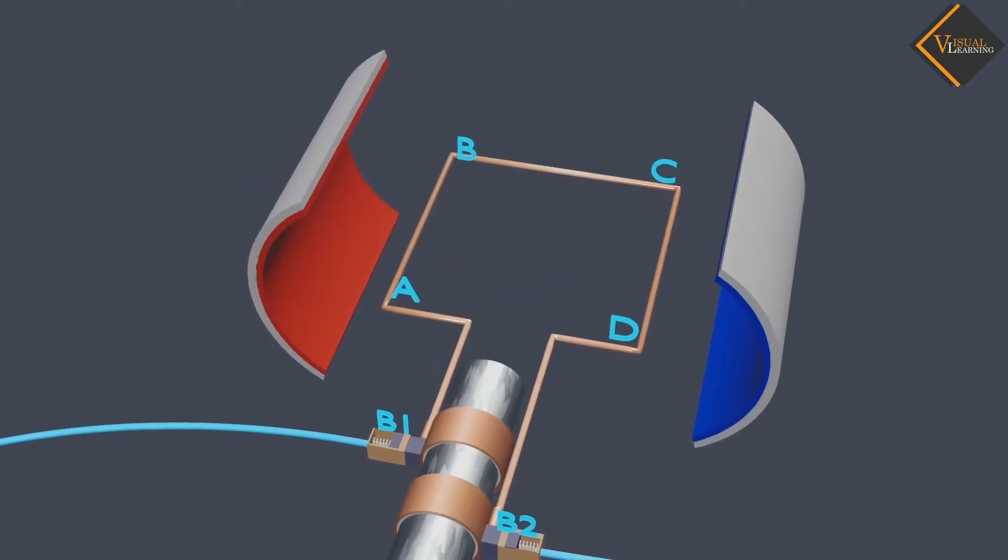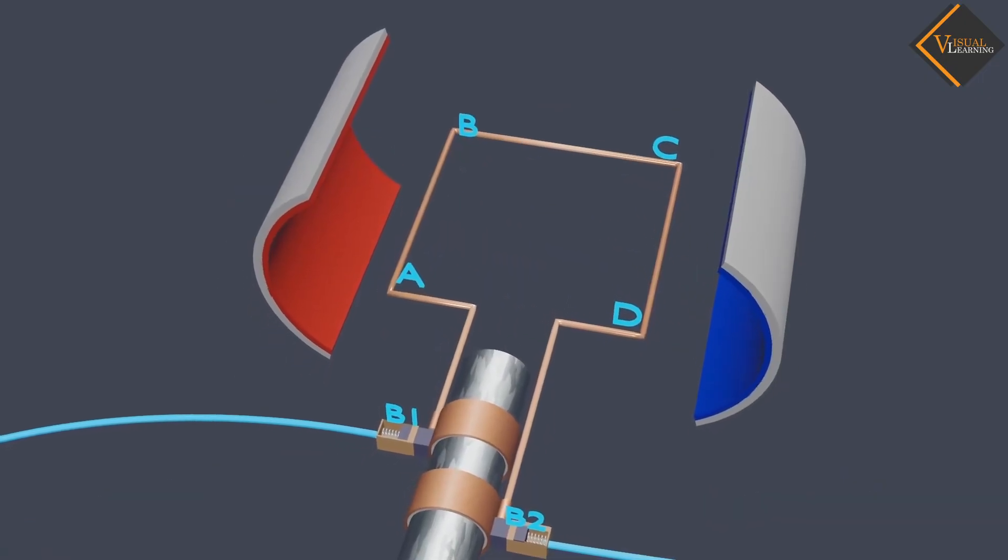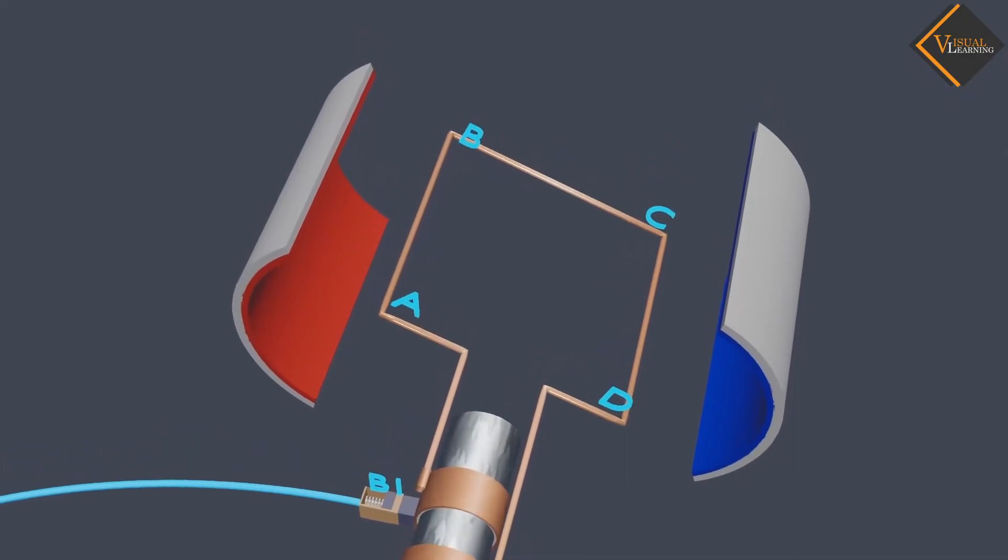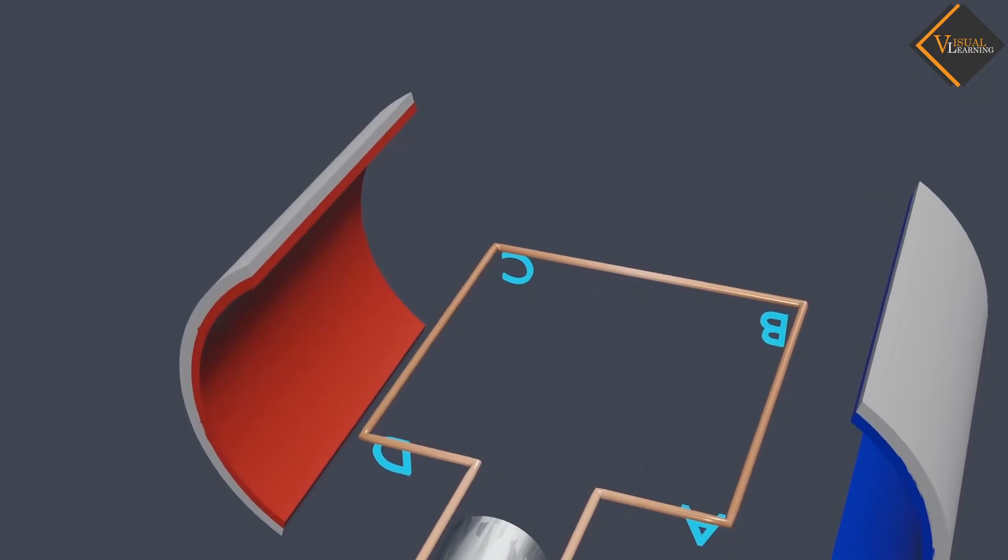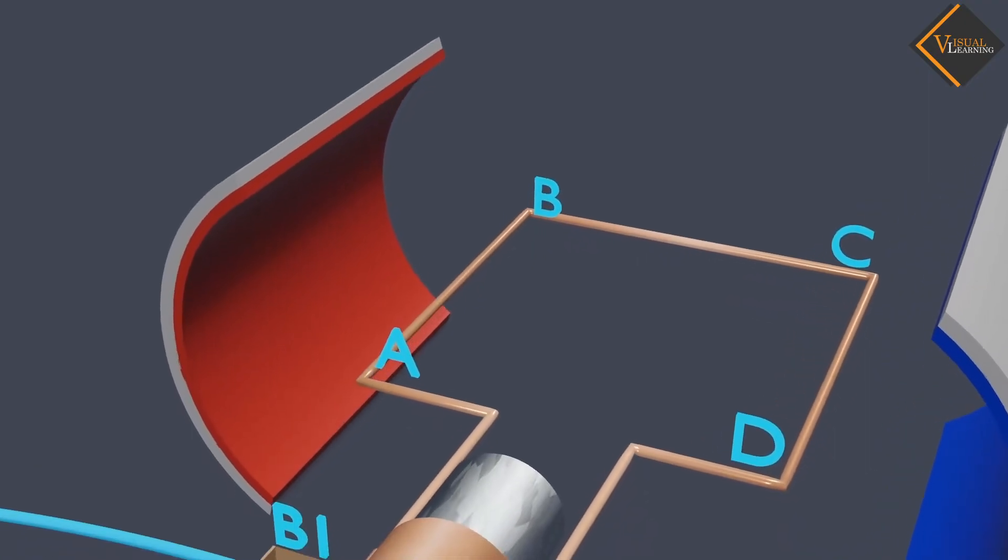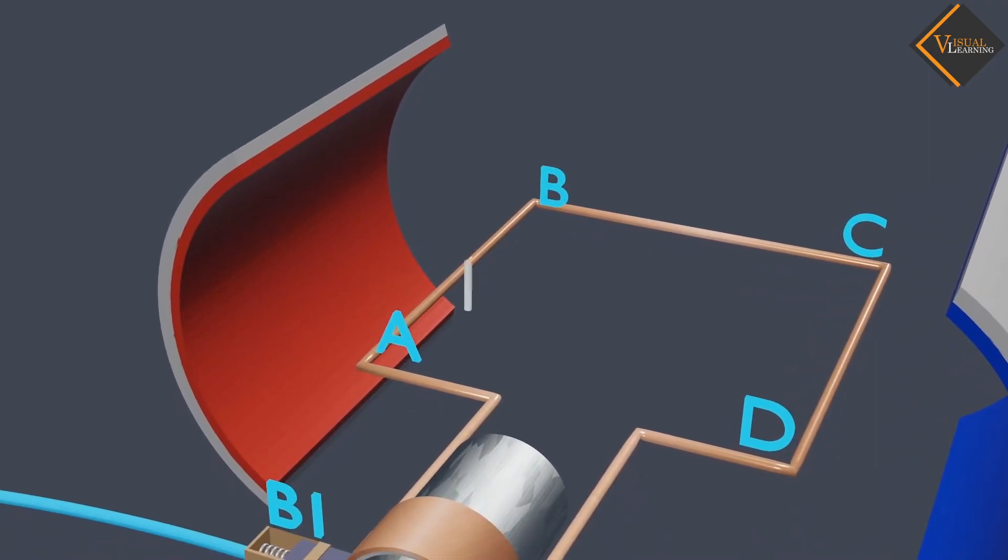Now, let us see, the rectangular coil ABCD is rotated clockwise in the arrangement. By applying Fleming's right-hand rule on segment AB, the force is acting upward and magnetic field is acting left to right. Then the current will be A to B.